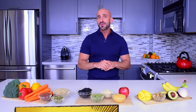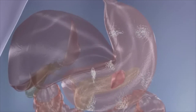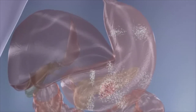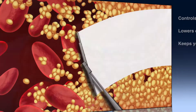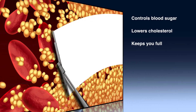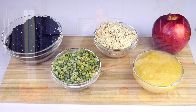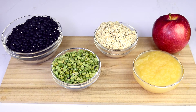The second type of fiber is soluble fiber. When you eat soluble fiber, it attracts water and turns into a gel during digestion. This gel slows digestion, and it helps to control blood sugar, lowers cholesterol, and keeps you full for a longer time. So where can you find soluble fibers? Beans, oats, applesauce, and apples, among other foods.